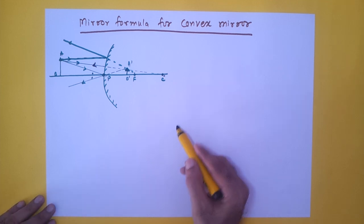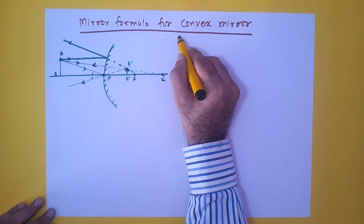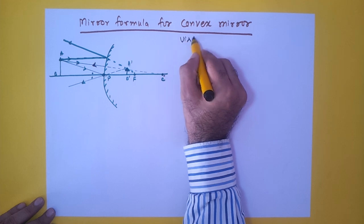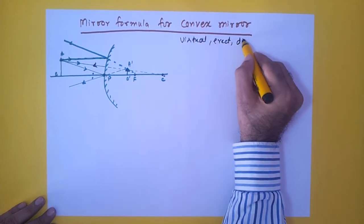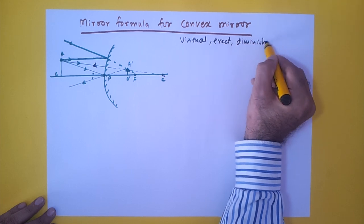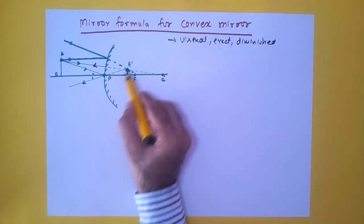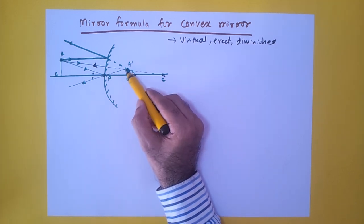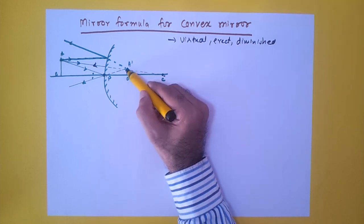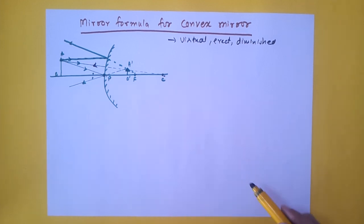In a convex mirror, whatever may be the position of the object, the image is always virtual, erect, and diminished or smaller. This is the characteristic of an image in case of a convex mirror. Ideally the image should be drawn as a dotted line because since the length is very small, I have used a full line, but actually the image should be shown by a dotted line.